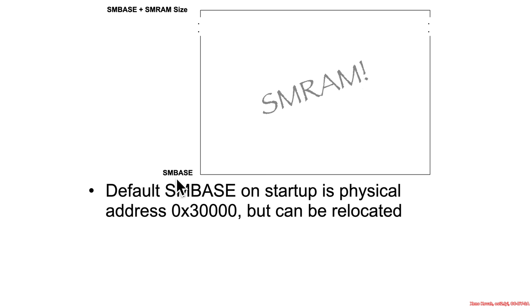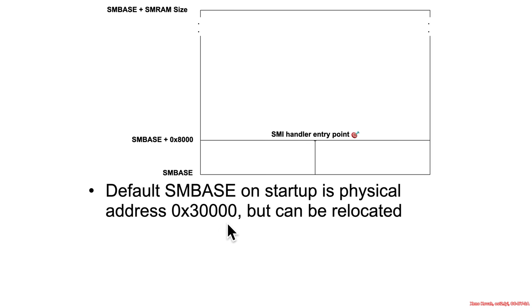In our SMRAM space, we start at SMBase, which on startup defaults to hex 30,000. It can be relocated somewhere else, as shown previously, and typically will be, but that's where it starts. So if it starts at hex 30,000, then the entry point is going to be 30,000 plus 8,000. Practically speaking, this is achieved because SMBase defaults as a CS base address — the shadow portion of the code segment — defaulting to 300,000, with the IP set to 8,000.